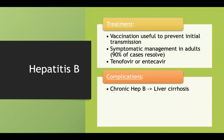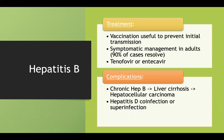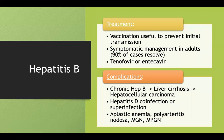Complications of hepatitis B include chronic hep B — which happens more often in neonates but can occur in adults — leading to liver cirrhosis and hepatocellular carcinoma. Another important complication: hepatitis D can only infect you if you already have hepatitis B infection, so hep B patients are at risk for hepatitis D co-infection or superinfection. Other complications include polyarteritis nodosa — a vasculitis sometimes tested in conjunction with hepatitis B.